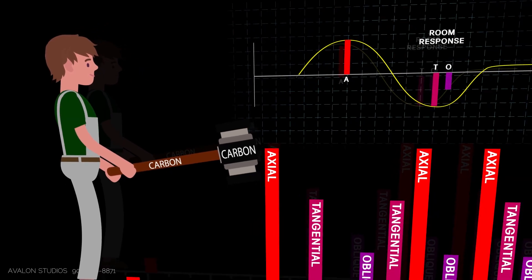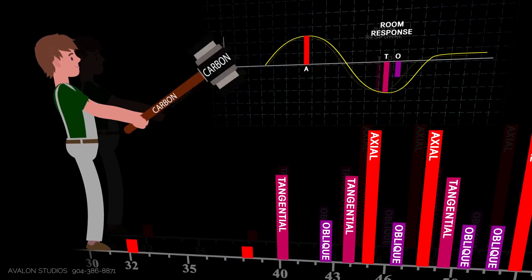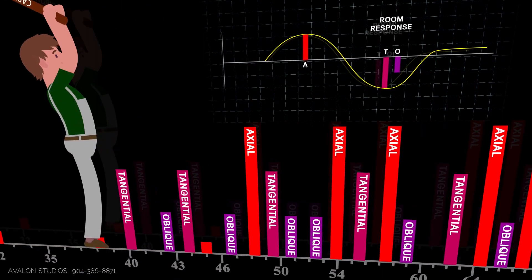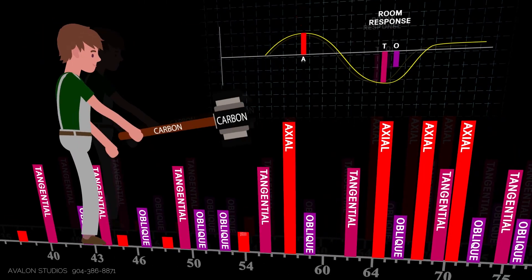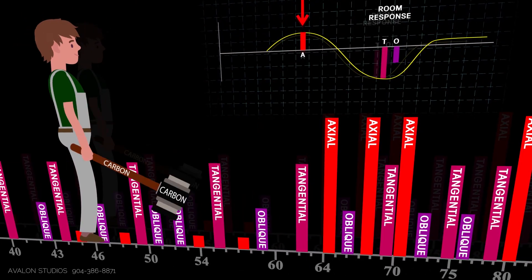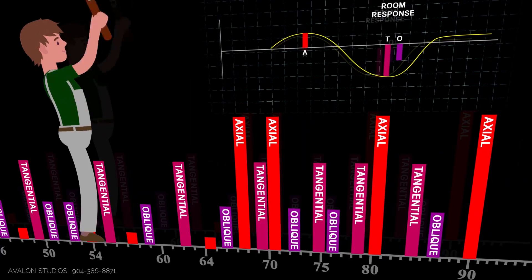So as our animated character strikes these axial modes and you observe the frequency response going down, that's what we want. We want to attenuate, we want to absorb them. Now how do we do that?